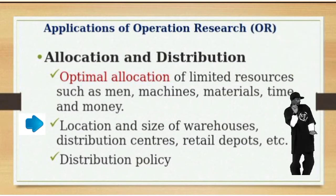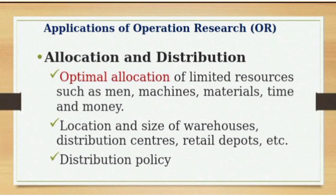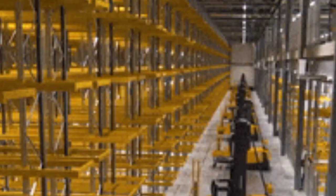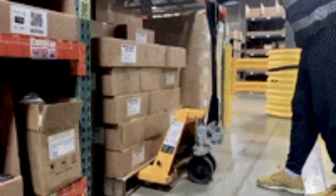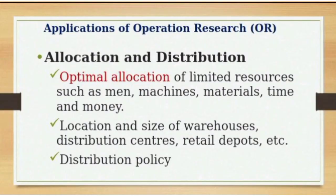Another area under allocation and distribution is the location and size of warehouses. What size of warehouse do you need to keep your materials? If you have too small an area for materials that require ventilation, that would be a problem. So you must be able to determine the size of the warehouse that will accommodate all your materials, and you need the application of OR to do that.